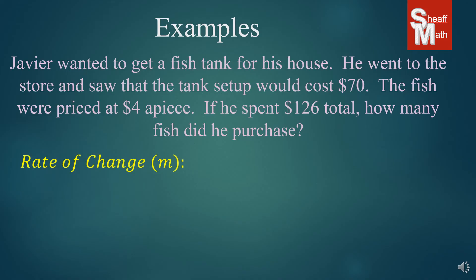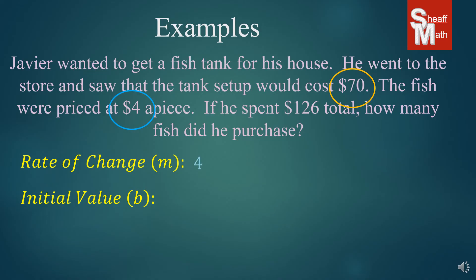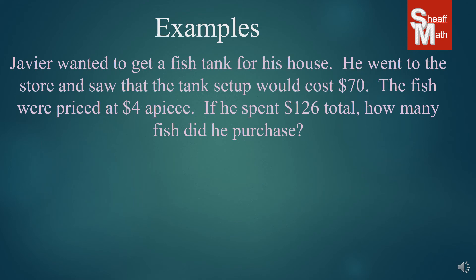We are going to find the rate of change. Which number here is going to make the price go up or down at a constant rate? Well, it depends on how many fish he gets — $4 a piece. So we have $4 for our m. The initial value would be how much he had to pay up front: $70 for the tank setup — that's what he's going to pay whether he gets any fish or not. So we set up our slope-intercept equation with $4 for m and $70 for b, and now we apply this equation to the question.